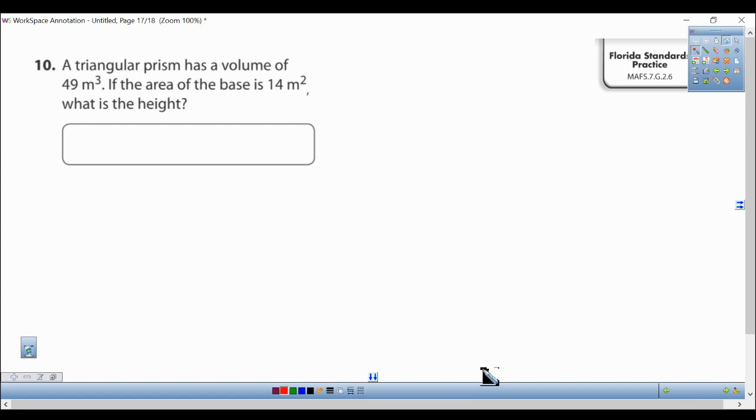A triangular prism has a volume of 49 meters cubed. If the area of the base is 14 meters squared, what is the height?